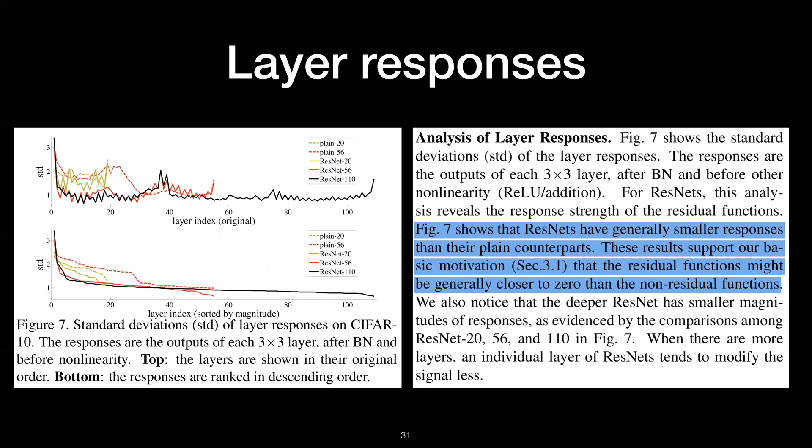They did more analysis on the layer responses. Layer responses is the output of the 3x3 layer after batch normalization and just before the nonlinearity. On the left side, they show the standard deviation of these layer responses. They say that compared to the plain network, ResNet has a lower standard deviation, which means their motivation on the residual function is correct, because the residual function has generally closer to zero than the non-residual functions.